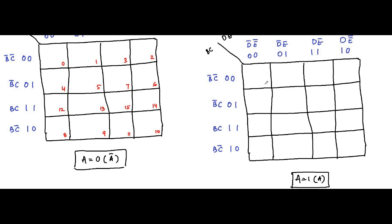For the second K-map (A equals 1), the cells are numbered 16, 17, 18, 19, 20, 21, 22, 23, 24, 25, 26, 27, 28, 29, 30, 31.